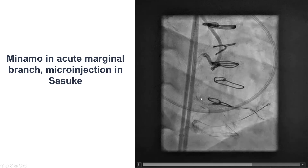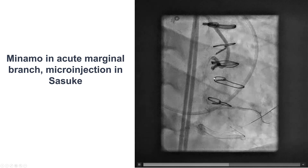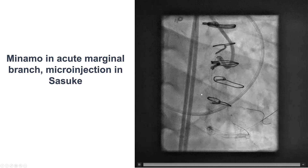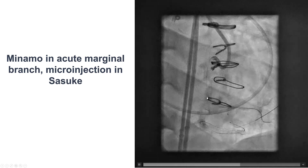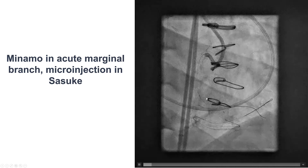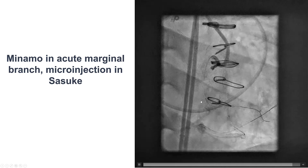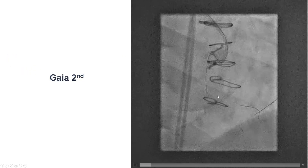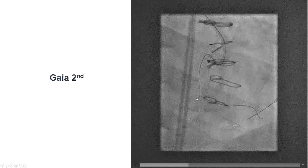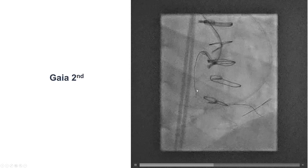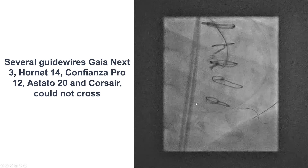We now moved on to the actual crossing of the CTO. As planned, we tried antegrade wire escalation. We placed a workhorse wire into an acute marginal originating next to the proximal cap, and then used a dual-lumen microcatheter in an attempt to penetrate the proximal cap. Despite multiple guide wires, including a Gaia Second, there was inability to advance through the very calcific proximal cap.